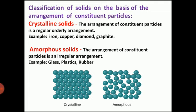Let us study the differences between these two types. Crystalline solid: the arrangement of constituent particles is regular and orderly. Examples: iron, copper, diamond, graphite. Amorphous solid: the arrangement of constituent particles is irregular. Examples: glass, plastic, rubber. In crystalline solids, the specific arrangement creates strong intermolecular forces, making them hard to break. In amorphous solids, the irregular arrangement creates weak intermolecular forces, so they break easily.